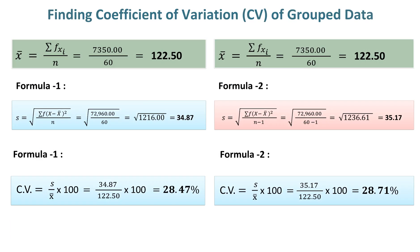Finding coefficient of variation of grouped data. The standard deviation value which is the numerator value for finding coefficient of variation is 34.87 and mean value which is the denominator value is 122.50.